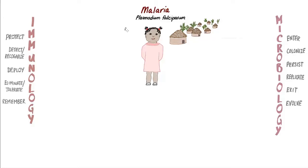Farida had been suffering from cycles of high fever, shivering, and sweating, or diaphoresis, for the past 10 days. Her mother had initially tried giving her some teas made with traditional medicines, but every 36 to 48 hours, the paroxysms, or cycles, of fever, shivering, and sweating returned. Farida had been listless and had started complaining of terrible pain in her head. When the whites of her eyes started to turn yellow, her mother realized she needed to seek medical treatment.